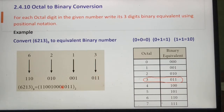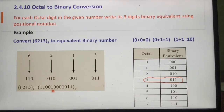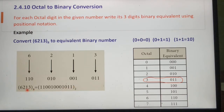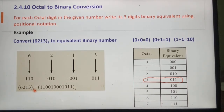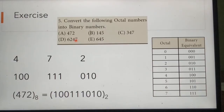Finally we have to write all the binary digits together to the base 2. We have written 110, then 010, then 001, and 011, which is the equivalent binary number for octal number 6213 to the base 8. Like this you can convert any octal number into its equivalent binary number.